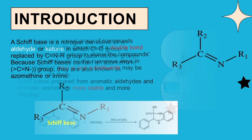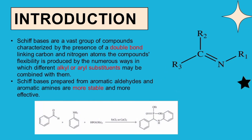Schiff bases are a vast group of organic compounds characterized by the presence of a double bond linking carbon and nitrogen atoms. The compound's flexibility is produced by the numerous ways in which alkyl or aryl substituents may be combined with them. Schiff bases prepared from aromatic aldehydes and aromatic amines are more stable and more effective.